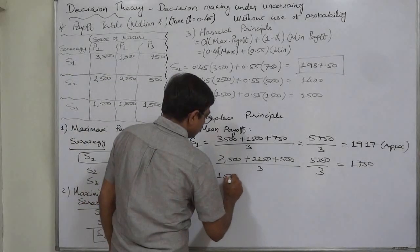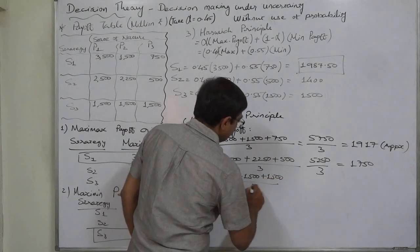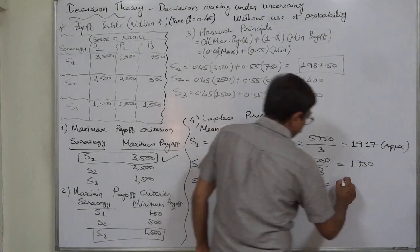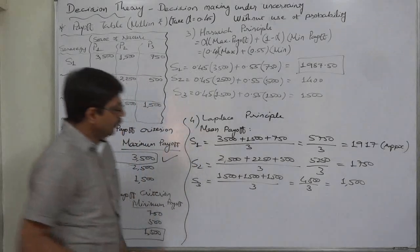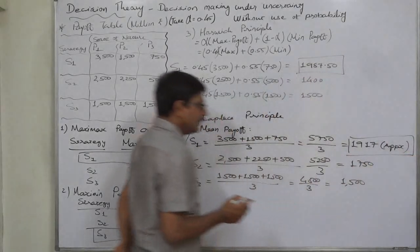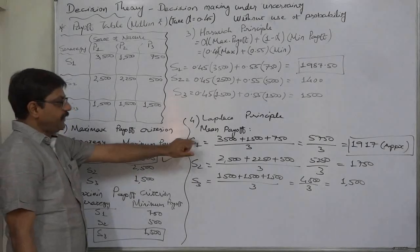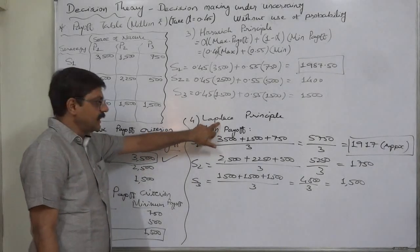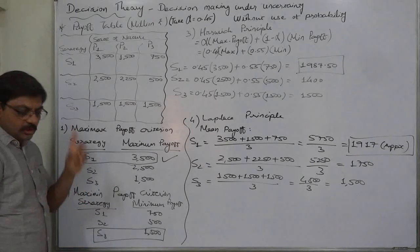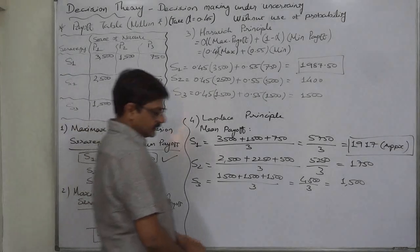For S3, it will be 1500 + 1500 + 1500 divided by 3, so 4500 ÷ 3 equals 1500. From these three mean values, the decision maker should select the highest one. Strategy S1 has the highest mean payoff, so if the decision maker uses the Laplace principle, strategy S1 should be selected. These four are the direct payoff criteria, and now we are going to discuss the regret criteria.